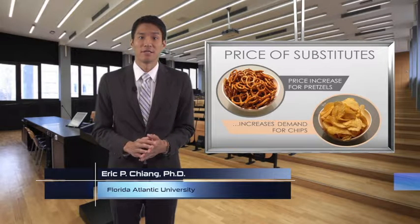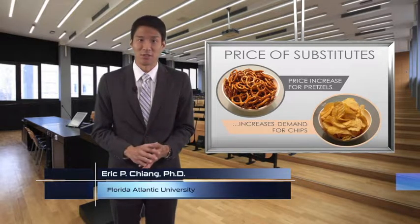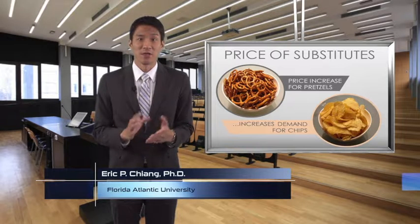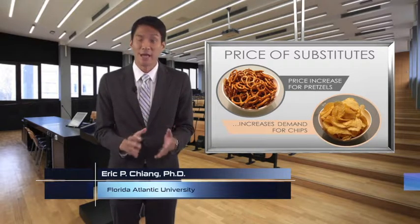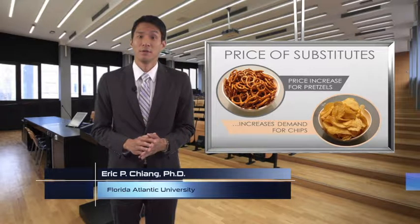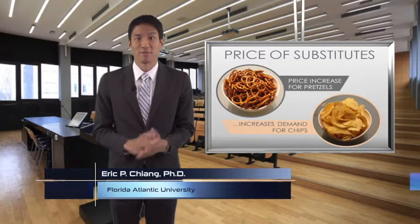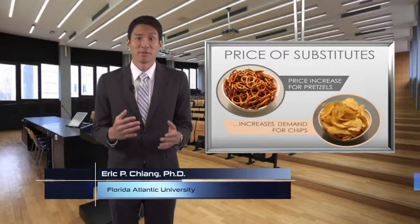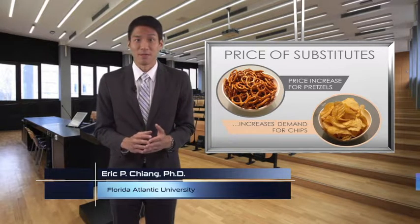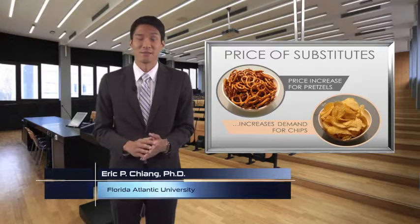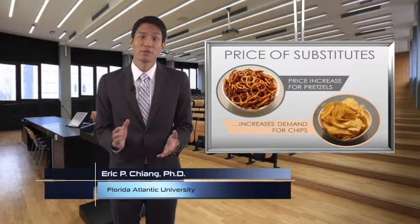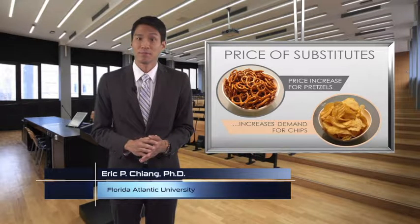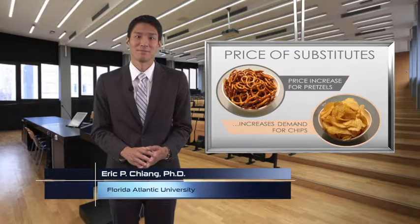The third factor is the price of substitutes. Here we are not talking about the price of the good measured by the demand curve, but instead the price of an alternative good. In the market for potato chips, if the price of pretzels rises, some consumers might select chips instead, increasing the demand for chips.